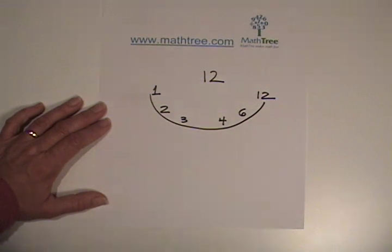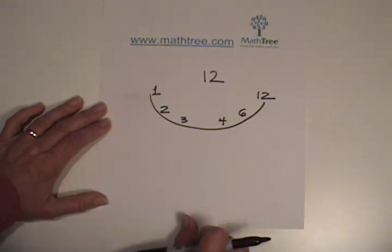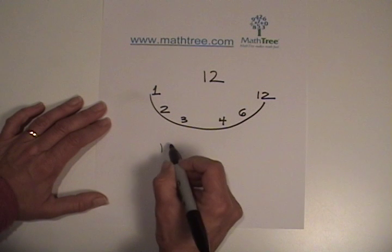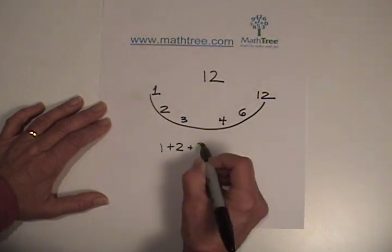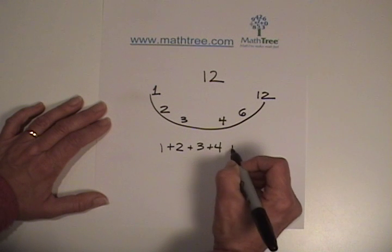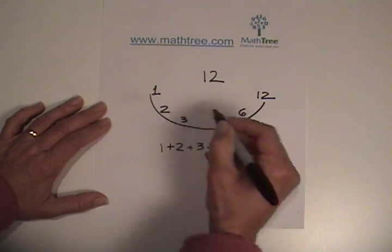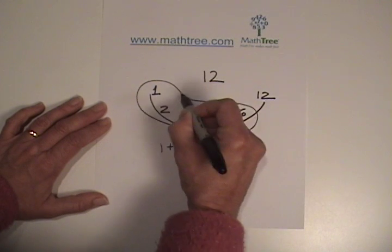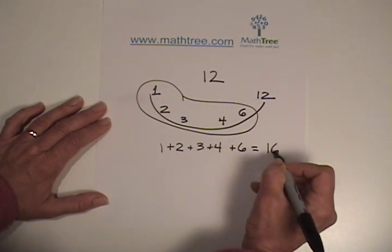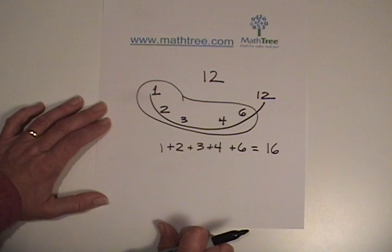So what does this have to do with abundance? A number is abundant when the sum of its factors, excluding itself, is greater than the number. So add up all the factors of 12, excluding 12. 1 plus 2 plus 3 plus 4 plus 6, and that equals 16. 16 is greater than 12, so 12 is abundant. It's the first abundant number. Many measurement numbers are abundant.